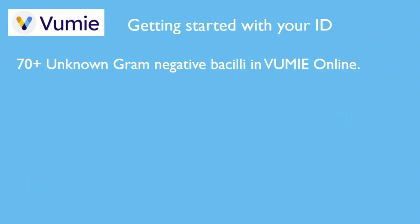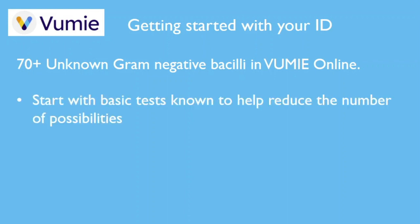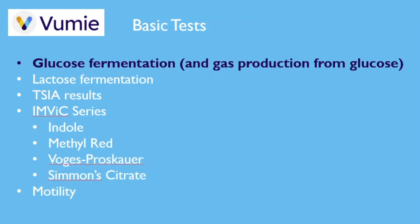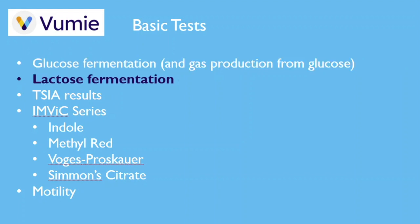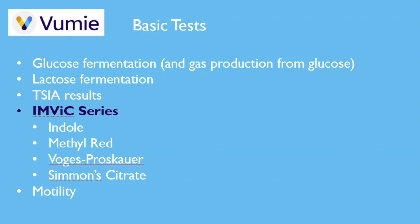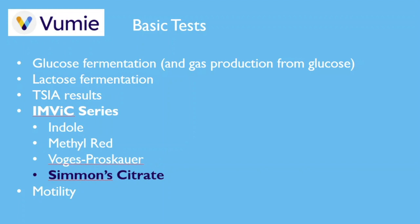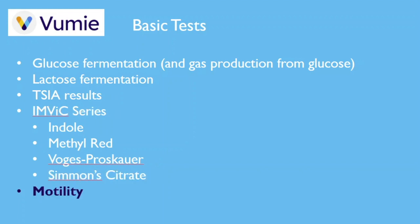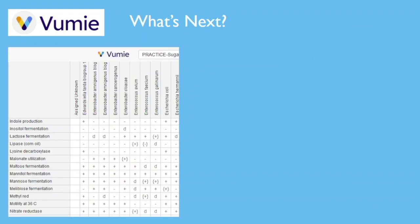There are 70 species of gram-negative bacilli that are possible unknowns for you in Vumi Online. Our suggestion is to complete some basic tests known to be very useful for identifying bacteria of this type: glucose fermentation along with gas production from glucose, lactose fermentation results from the triple sugar iron agar medium (TSIA), the MVIC series — indole test, methyl red test, Voges-Proskauer test, and citrate utilization test — and the motility test. By starting with these tests, you will be able to reduce the number to 10 to 20 possible IDs, at which point it is time to begin consulting the ID matrix to find useful tests for completing the identification.